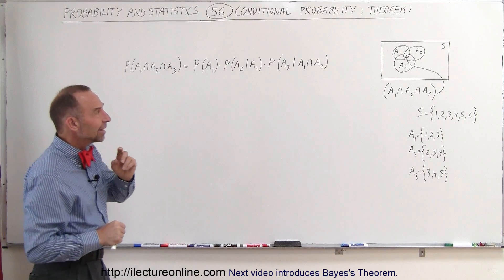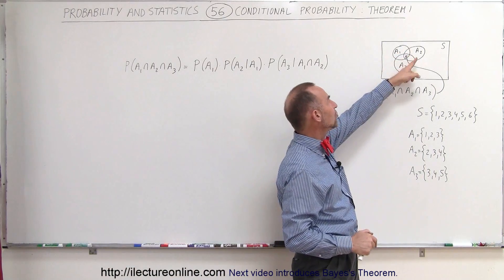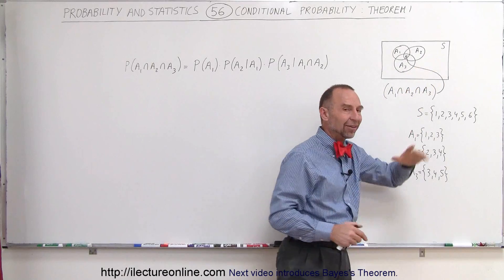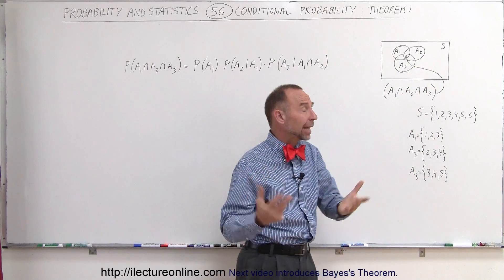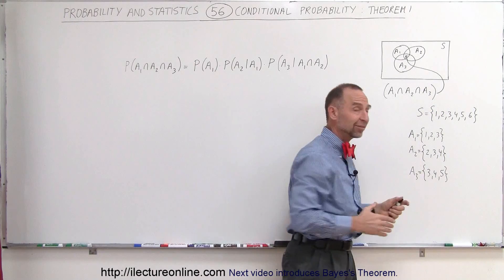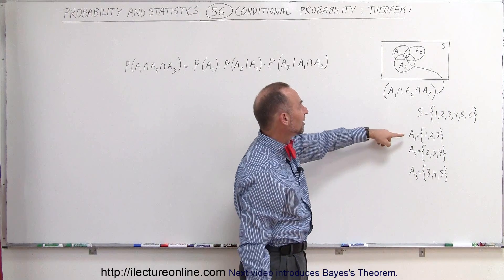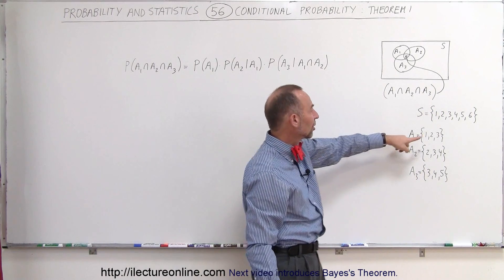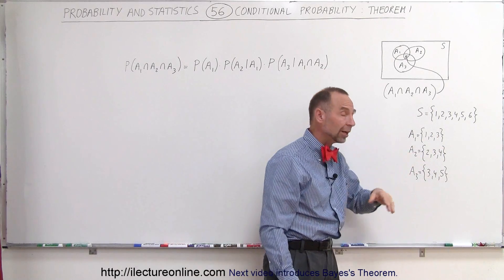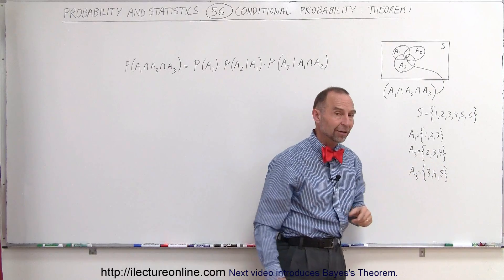This theorem says that if you have three events — A1, A2, and A3 — in the sample space S. A good example is tossing a die, where the sample space is {1, 2, 3, 4, 5, 6}. Let's say event A1 is tossing numbers 1, 2, and 3; event A2 is tossing numbers 2, 3, and 4; and event A3 is tossing numbers 3, 4, and 5.